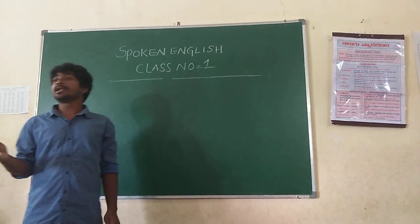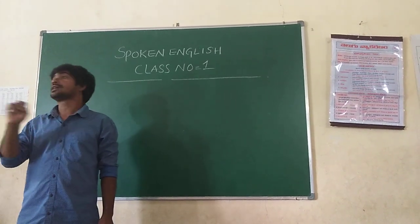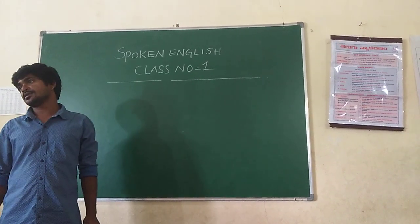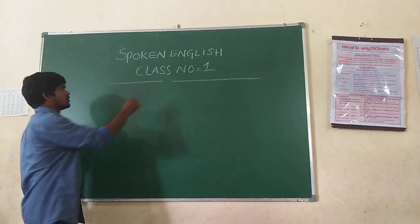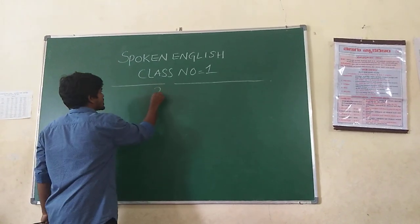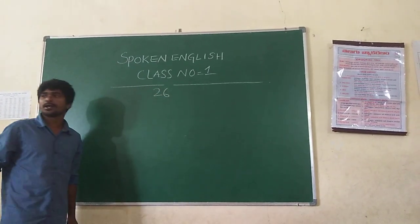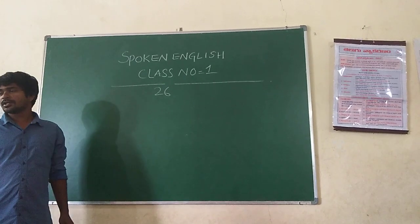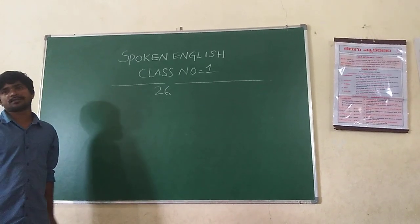How many letters are there in the English language? 26 letters.